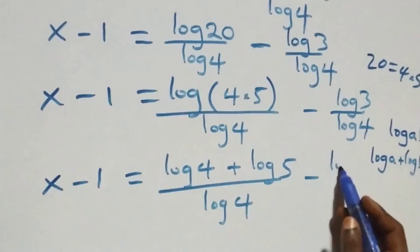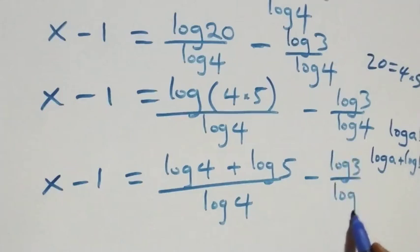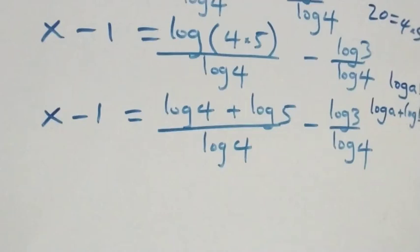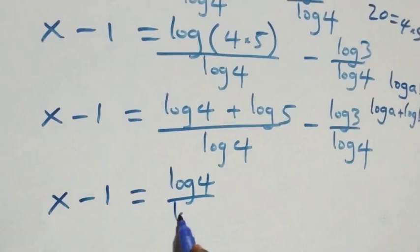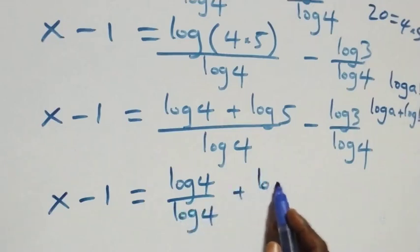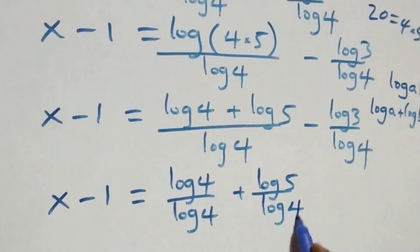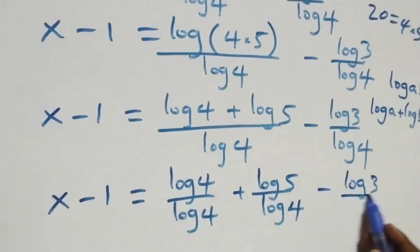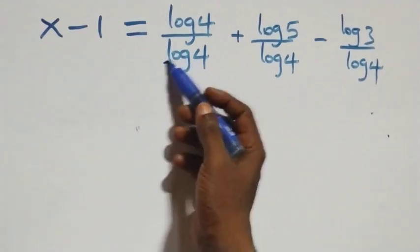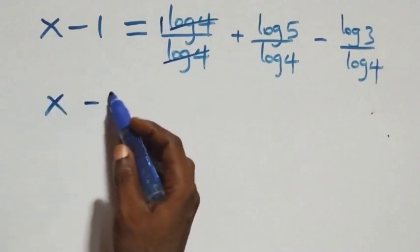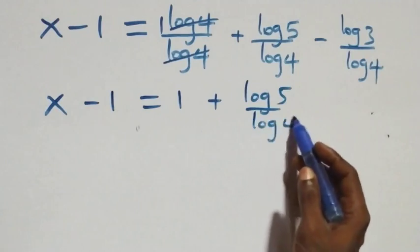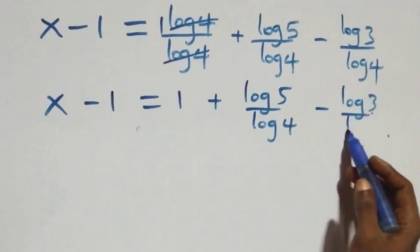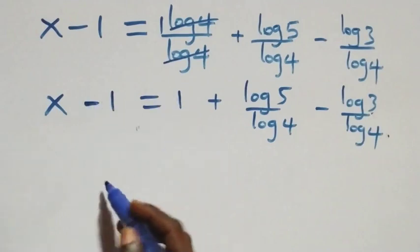Next step: we separate into two fractions and have x minus 1 equals log 4 over log 4, plus log 5 over log 4, minus log 3 over log 4. Log 4 cancels each other in the first fraction, leaving 1. So x minus 1 equals 1 plus log 5 over log 4, minus log 3 over log 4.